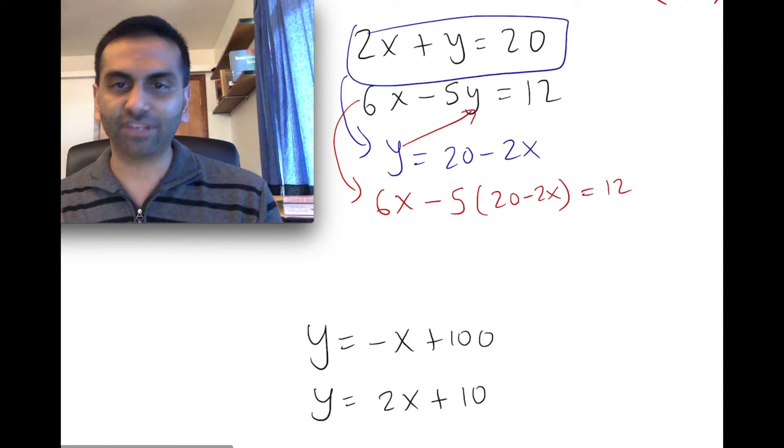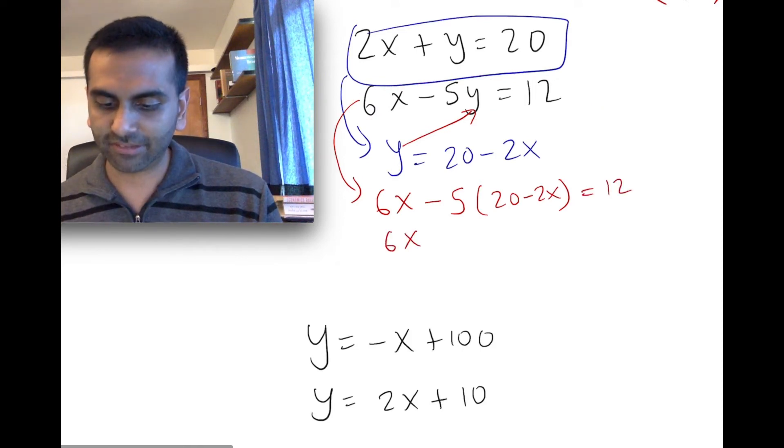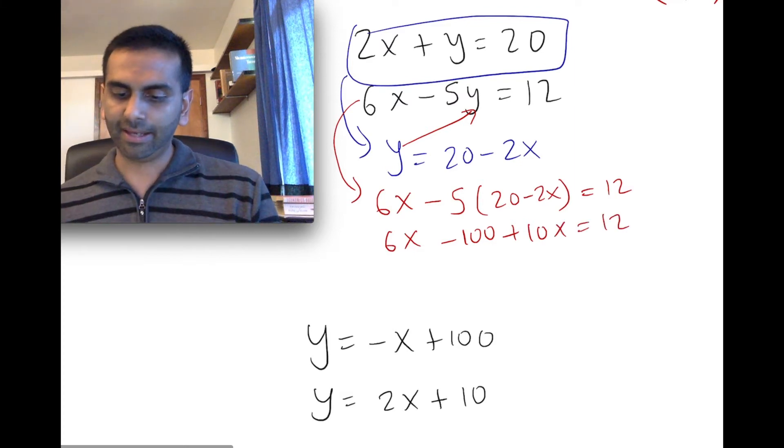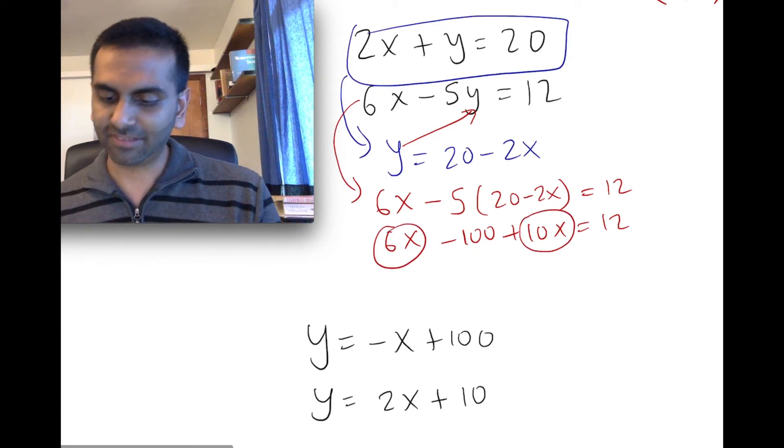Alright, once we have that, just the algebra from here. 6x, distribute the -5, so that's going to be -100 + 10x, because negative times negative is positive, equals 12. And let's see, we got 6 plus 10, 16x equals, if we add 100 to both sides, we have 112.